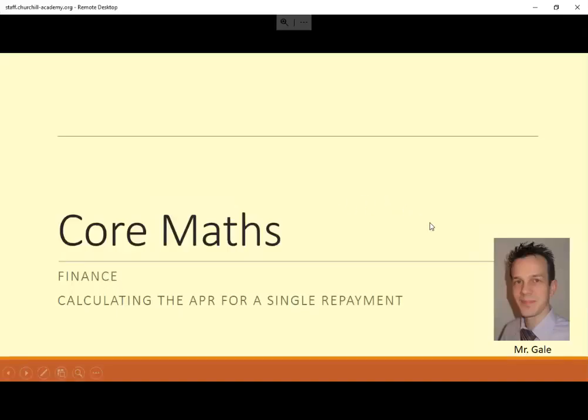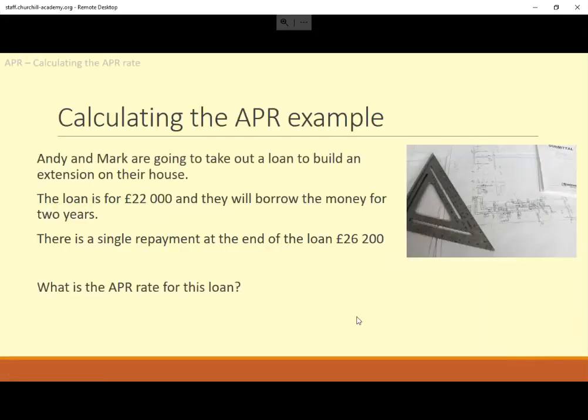Hello, this is Mr. Gail and we're going to look at APR, working out what that is when your loan has got a single repayment at the end. Here's my example. Andy and Mark are going to take out a loan to build an extension on their house. The loan is for £22,000 and they'll borrow the money for two years. There's a single repayment at the end of the loan for £26,200. What was the APR rate for this loan?